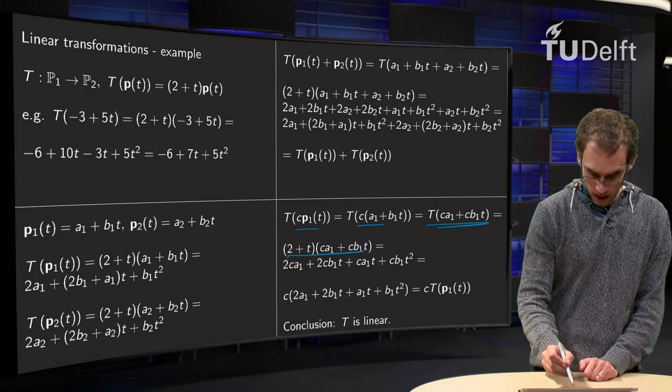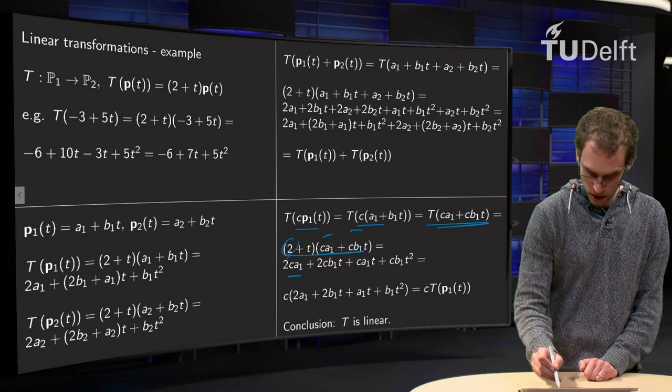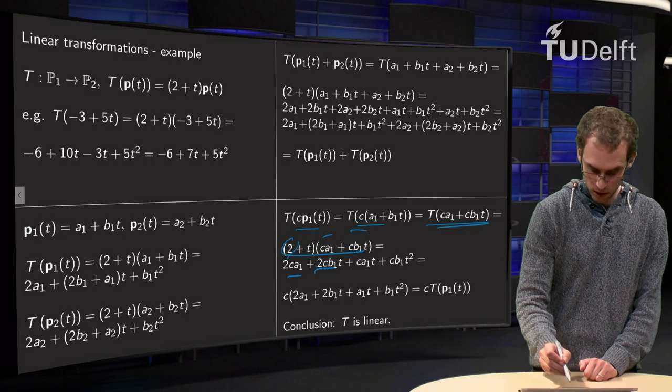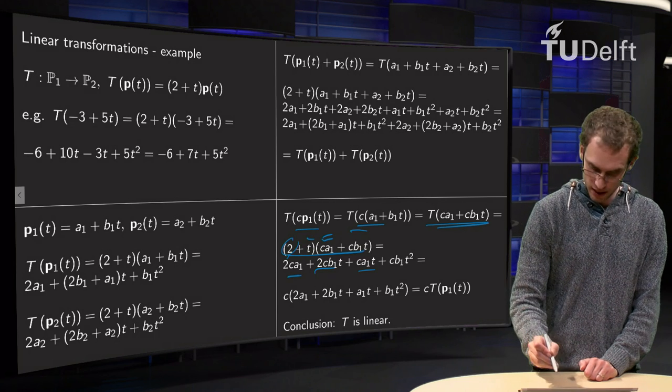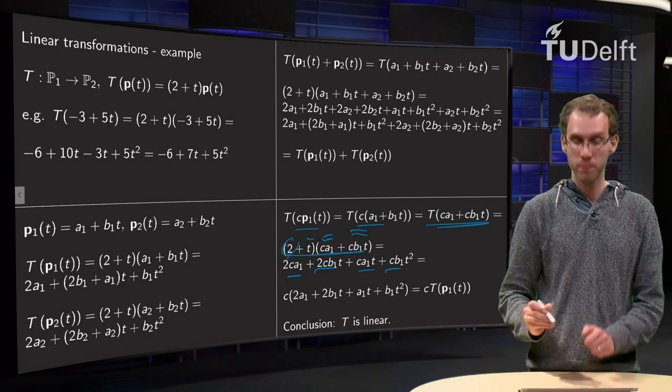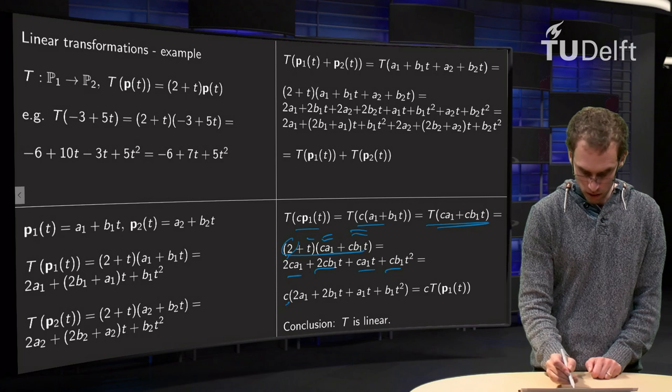So what do we get? A 2 times C times a1, a 2 times C times b1t over there and then you do the t's: t times C times a1 over there and a t times C times b1t over there. And then you see you have C's everywhere so you can take the C in front, that's what we do over there.